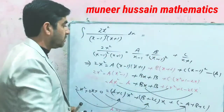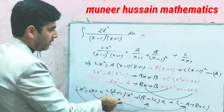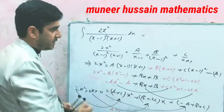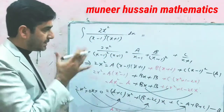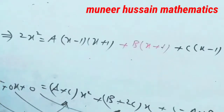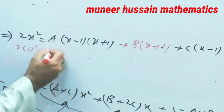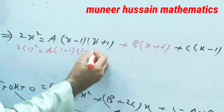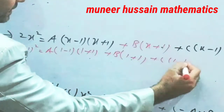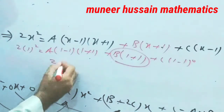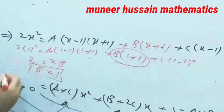By putting x equals 1 and x equals minus 1, we can get two values out of a, b, c. For the third value, we use a comparison from the equation. Putting x equals 1: a into (1 minus 1) is 0, b into (1 plus 1), and c into (1 minus 1) squared is 0. So only 2 times b equals 2, giving b equals 1.